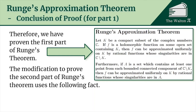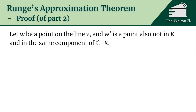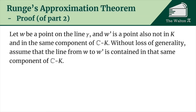To prove the second part we need additional work. Let w be a point on the line gamma and w' be a point not in K that lies in the same connected component of the complement of K. Without loss of generality we can assume the line connecting w to w' is contained in that same component, meaning it never exits. If it did, we could use a piecewise linear path and apply the same argument on each segment.